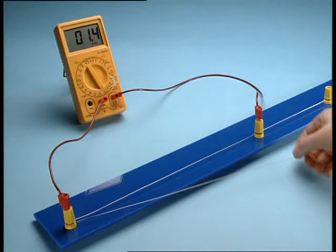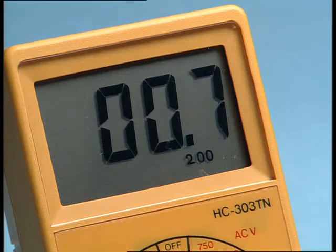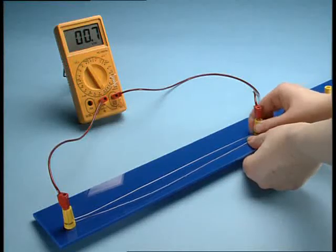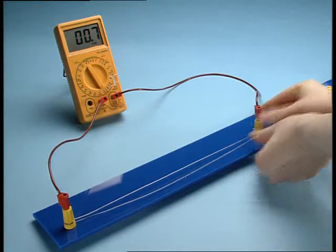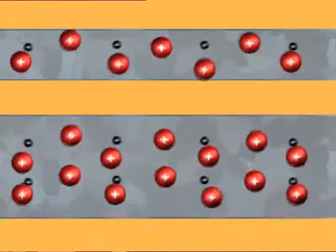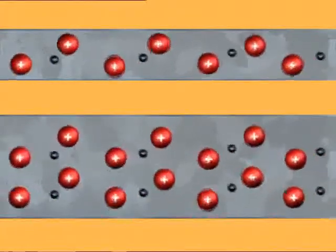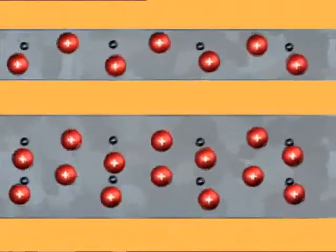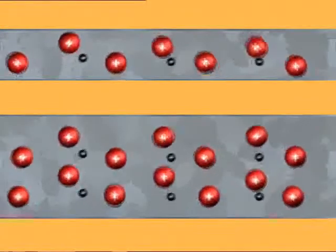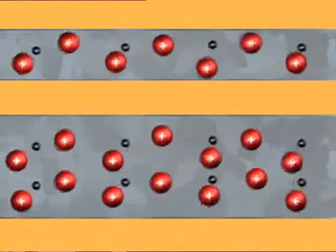Does thickness also affect resistance? Adding an equal length of the same wire effectively doubles the thickness. The thicker the wire, the lower the resistance. In our model of a thin and a thick wire, the electrons move at the same speed through both, but there are more electrons moving in the thicker wire, so there's more current and less resistance.